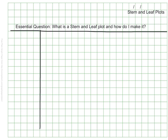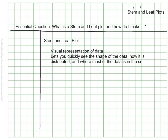Stem and leaf plots are visual representations of data. They let you see very quickly the shape of the distribution of the information, so you can see where most of the data lies in a data set. It's called a stem and leaf plot because it looks sort of like the stem of a plant with leaves coming off to the right side. So you can see here I have my stem and my leaf. Mathematically, our stem and leaf plot has numbers on it that represent data.